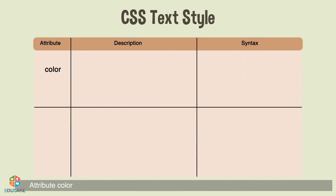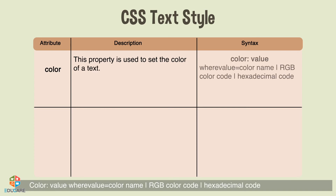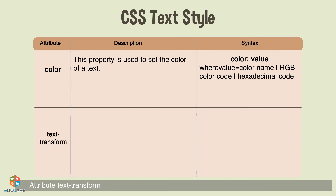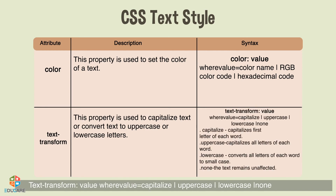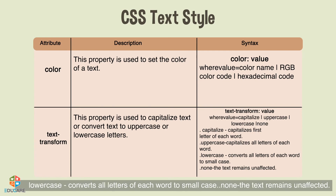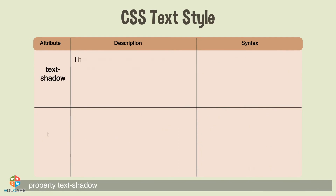The color property is used to set the color of a text; its value can be a color name, RGB color code, or hexadecimal code. The text-transform property is used to capitalize text or convert text to uppercase or lowercase. Its value can be capitalize, uppercase, lowercase, or none. Capitalize capitalizes the first letter of each word; uppercase capitalizes all letters; lowercase converts all letters to small case; and none leaves the text unaffected.